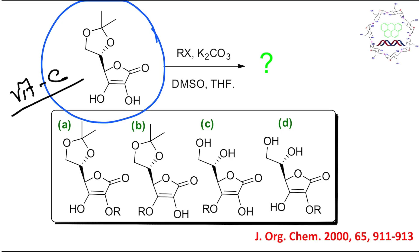From the name ascorbic acid, you can understand that this molecule is acidic in nature, and this acidity is mainly because of the hydroxyl group. Now the question is: which hydroxyl group? There are two hydroxyl groups. This is actually acetyl-protected Vitamin C, so these two hydroxyl groups should be free in the actual Vitamin C molecule. Since we are doing reactions, this part is protected.